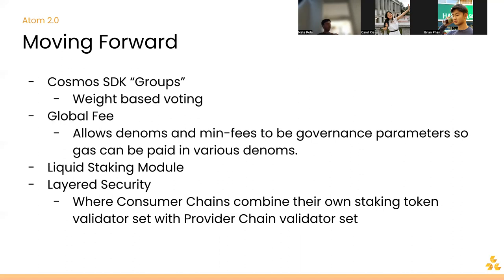On Osmosis, they collect all the non-OSMO fee tokens and do one fast swap at the end of the day, distributing them in OSMO. Chains can choose how to distribute. They're also doing cross-chain swaps where chains can initiate IBC swaps to Osmosis and send back the result. There's also the possibility of bundled tokens for transactions — multiple different token types in different quantities — which is pretty cool.